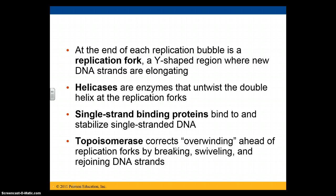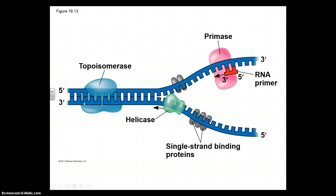The topoisomerase keeps the DNA in the right position so that replication can occur with as few mistakes as possible. Think about what happens if you have yarn and try to separate two pieces — the yarn is twisted, so when you try to separate them, the portion still together becomes crumpled and messy. Here we have helicase coming through, separating our two strands of DNA, and then single-stranded binding proteins represented in gray prevent the two strands from bonding back together.